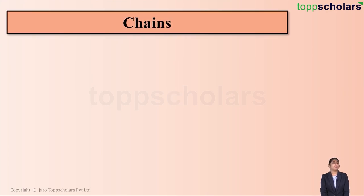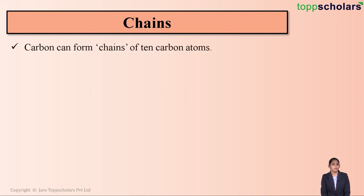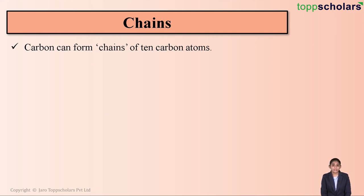If we talk about carbon, carbon has a unique property: it can form huge carbon chains. That is, it can link with other carbon atoms resulting in the formation of long chains of carbon atoms. In fact, carbon can form chains of about 10 carbon atoms.